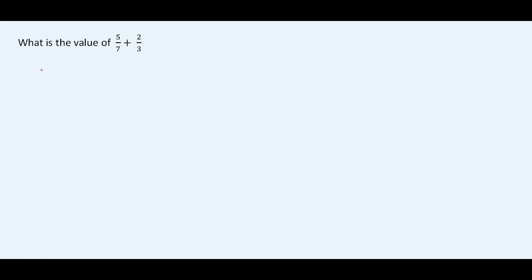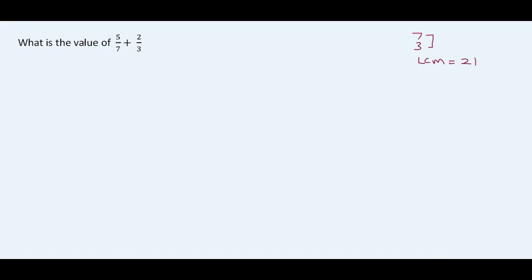So we have 5 over 7 plus 2 over 3. We have 7 and 3. Typically, if you have two prime numbers, the LCM is going to be the product, which is 7 times 3, which is 21.